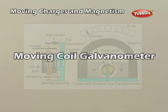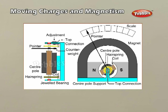Moving coil galvanometer. A moving coil galvanometer works on the principle that a current-carrying coil kept in a uniform magnetic field experiences a torque: T equals NIAB sin θ, where N equals the number of turns in the coil, I equals the current flowing through the coil, A equals the area of the coil, B equals the uniform magnetic field, and θ equals the angle between the area vector and the magnetic field.